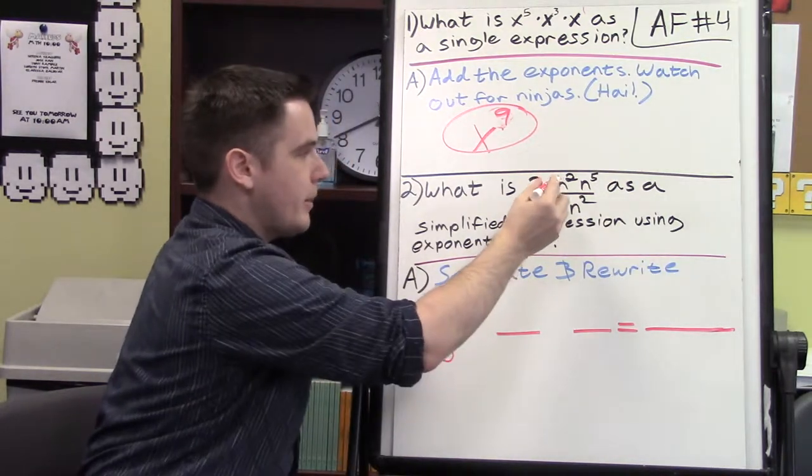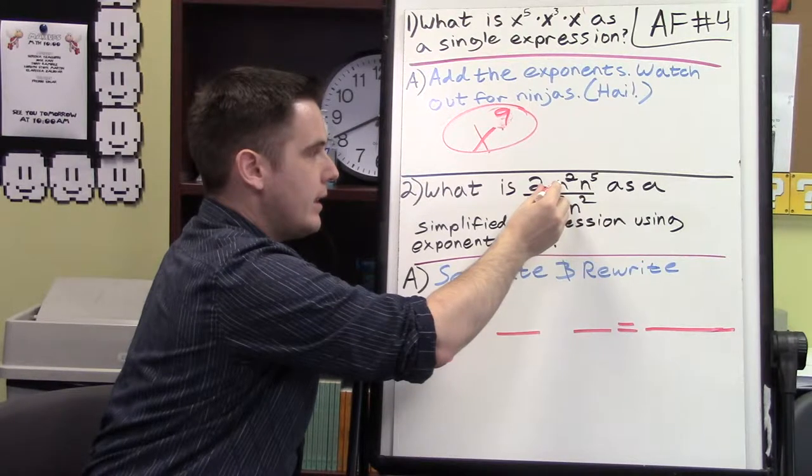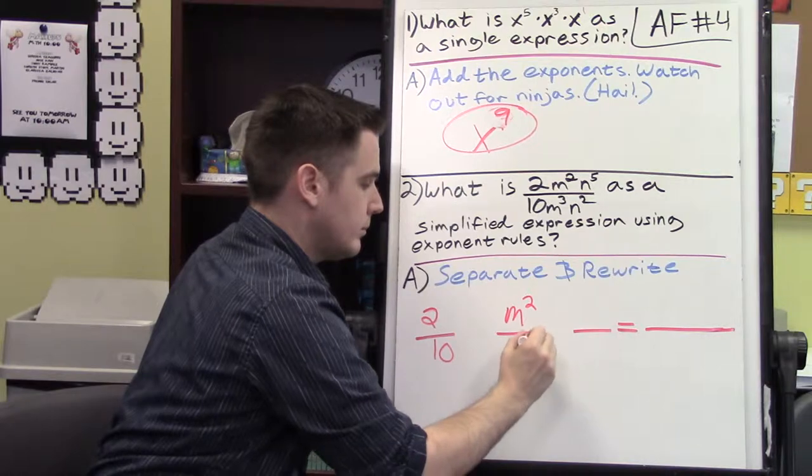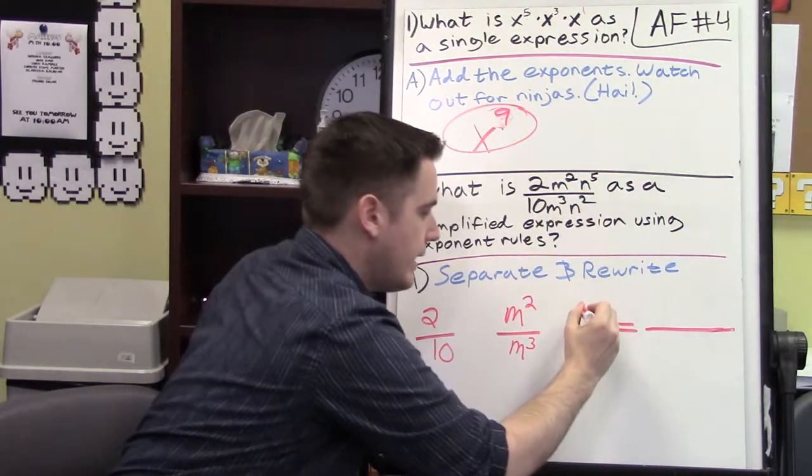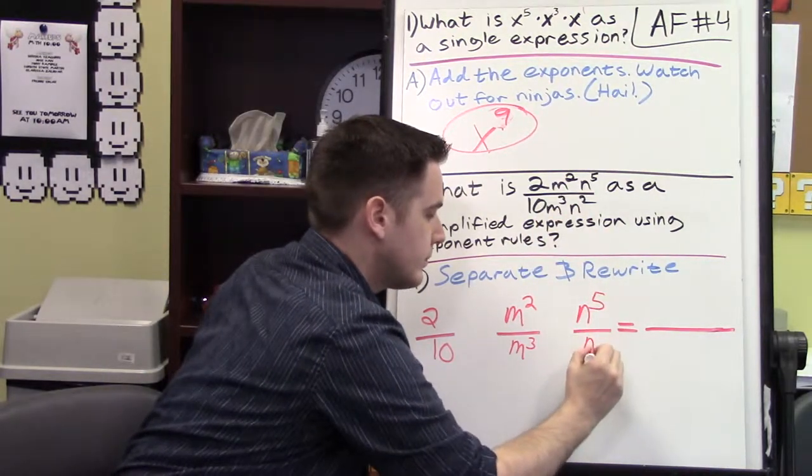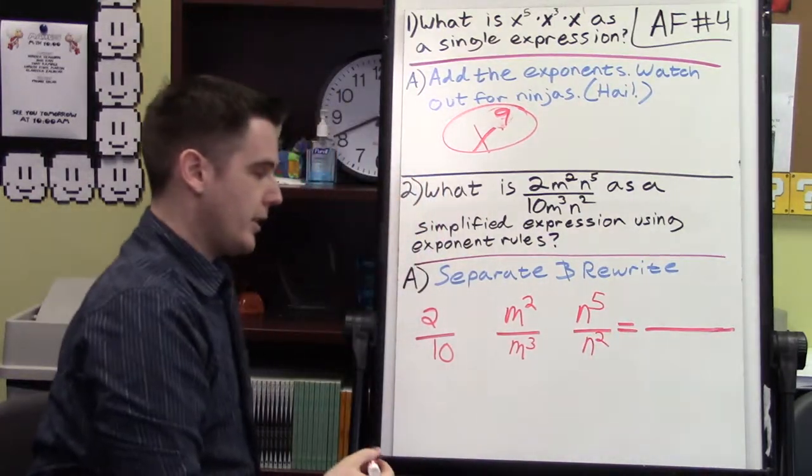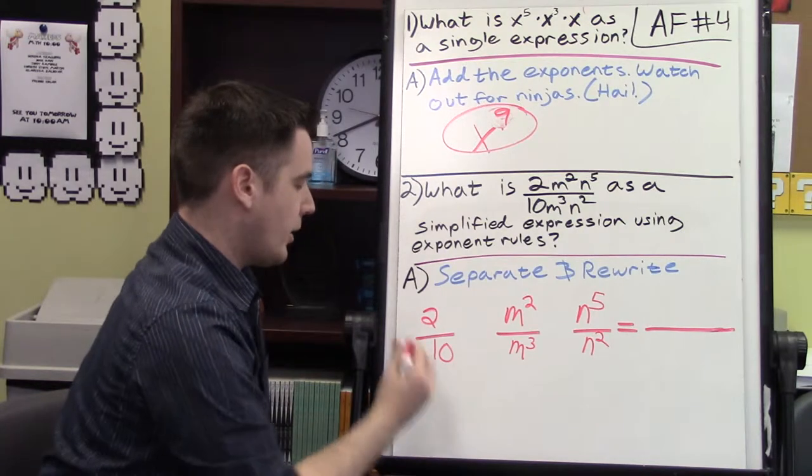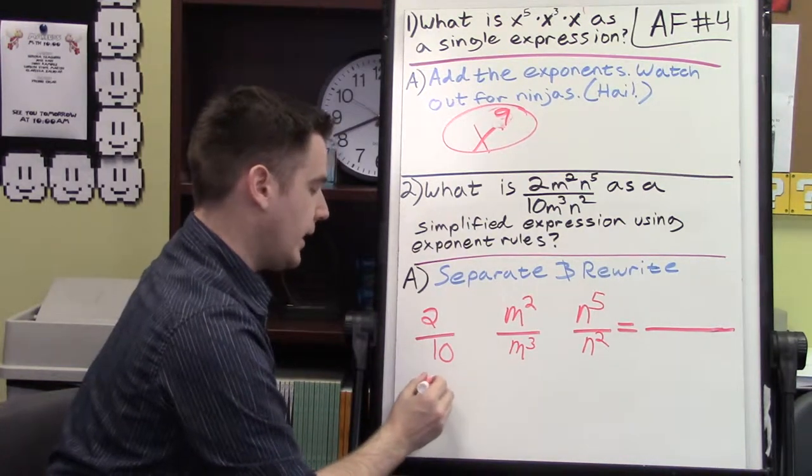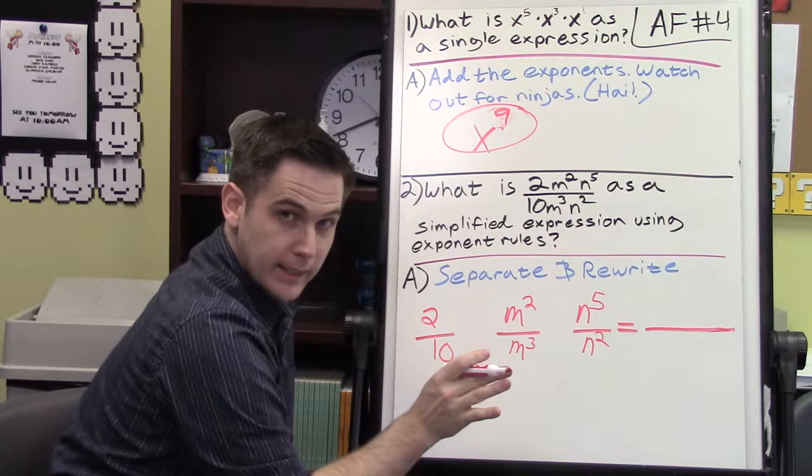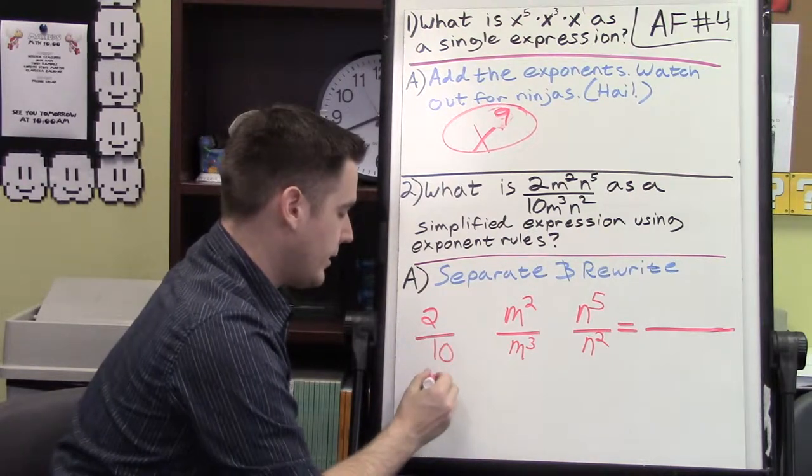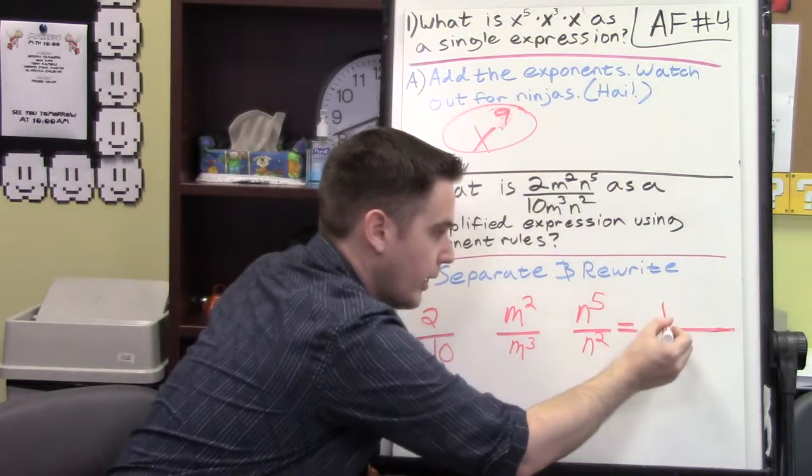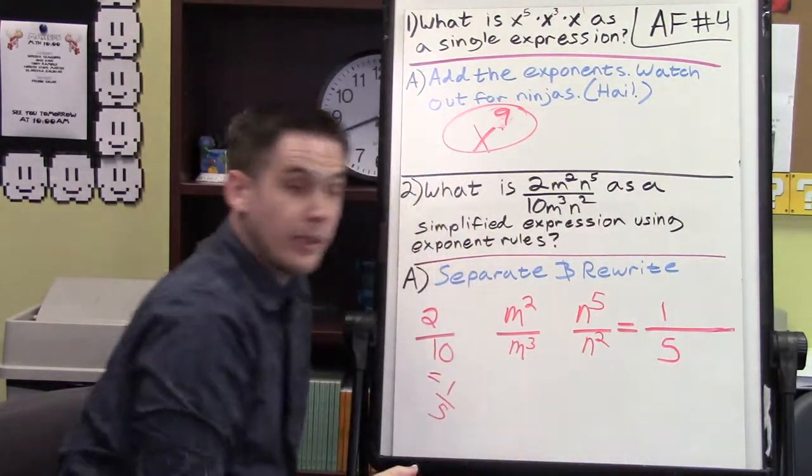Then I'm going to separate the m's, and then finally the n's. And then I'm just going to simplify, move it over. So 2 divided by 10, that is going to simplify - don't make a decimal out of this - just simplify it into 1 over 5. So we're going to put a 1 over 5 in our answer box.